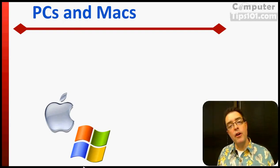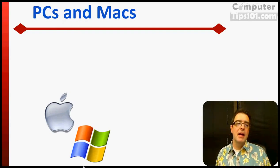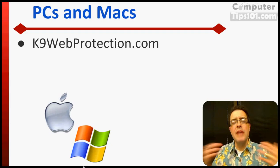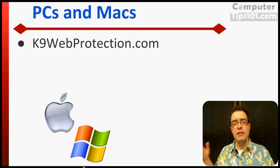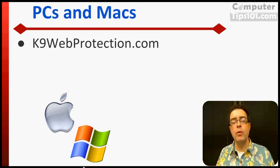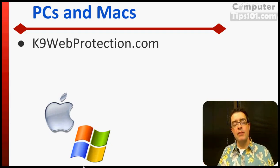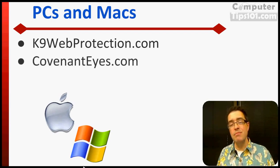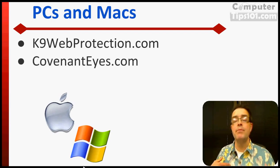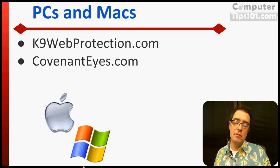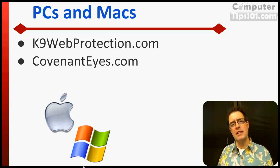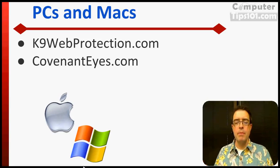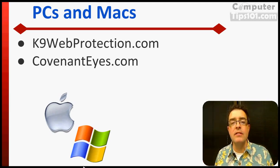So how do we do this? Well, if you have a PC or a Mac, one of the easiest ways is to use caninewebprotection.com. It's a wonderful, free piece of software. I've used it before and it works great. Another one — and believe it or not, this is actually my favorite — is CovenantEyes.com. CovenantEyes.com is not free, but it does have the most ability to work on every device.